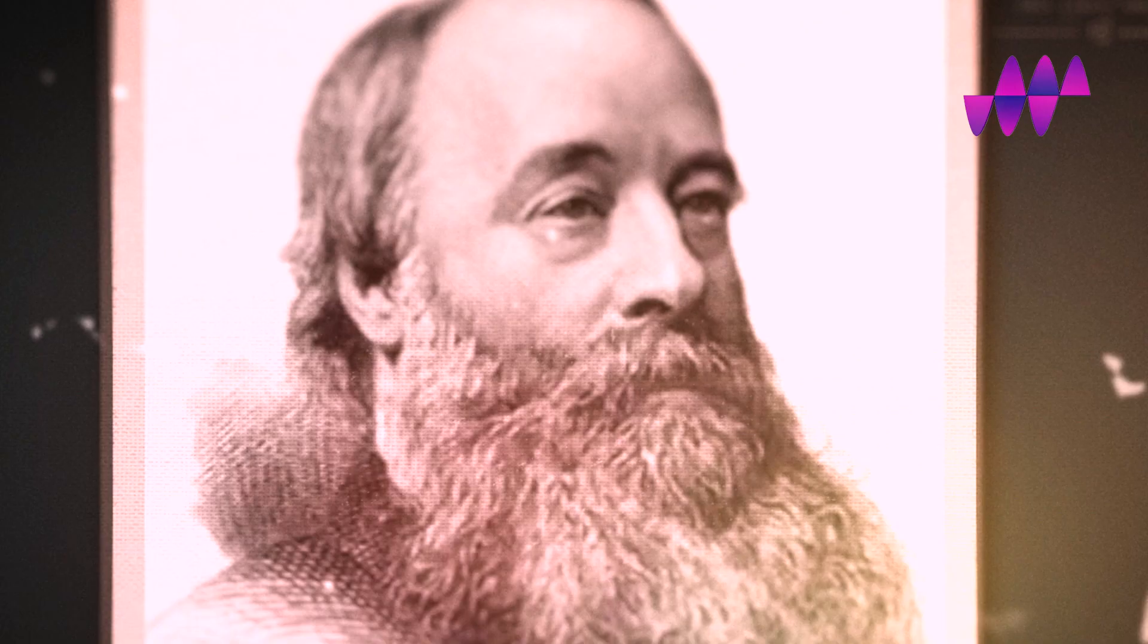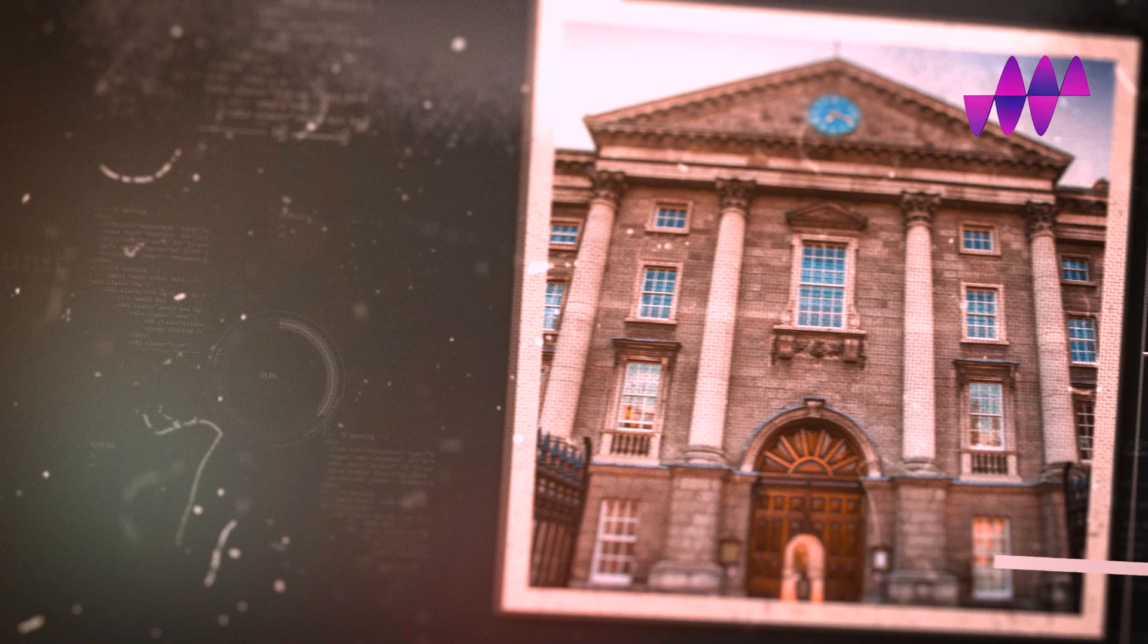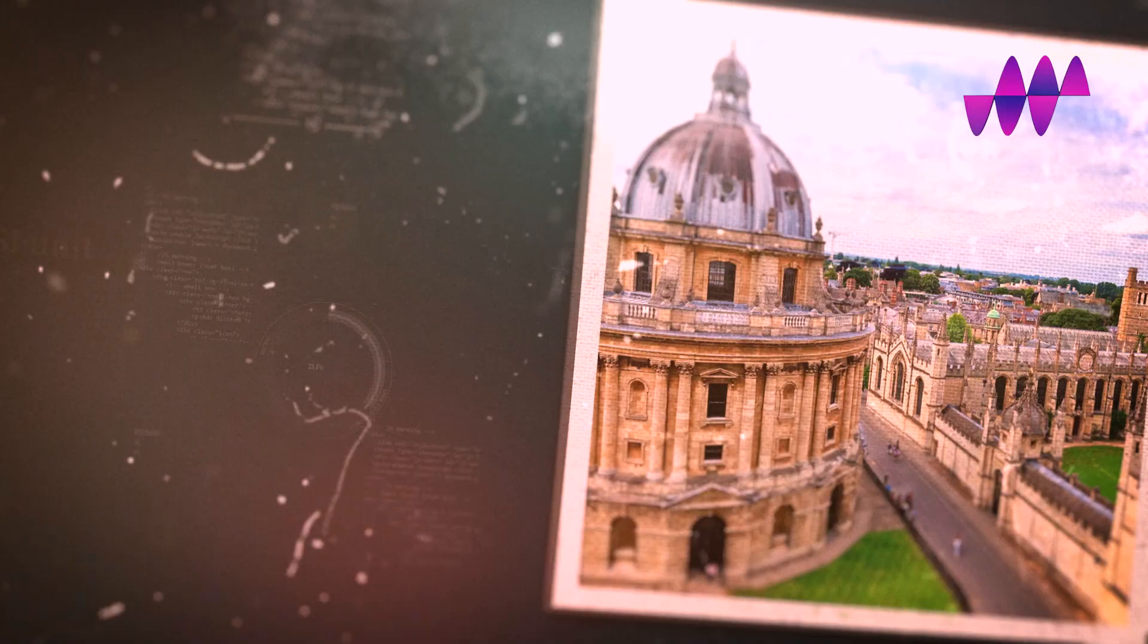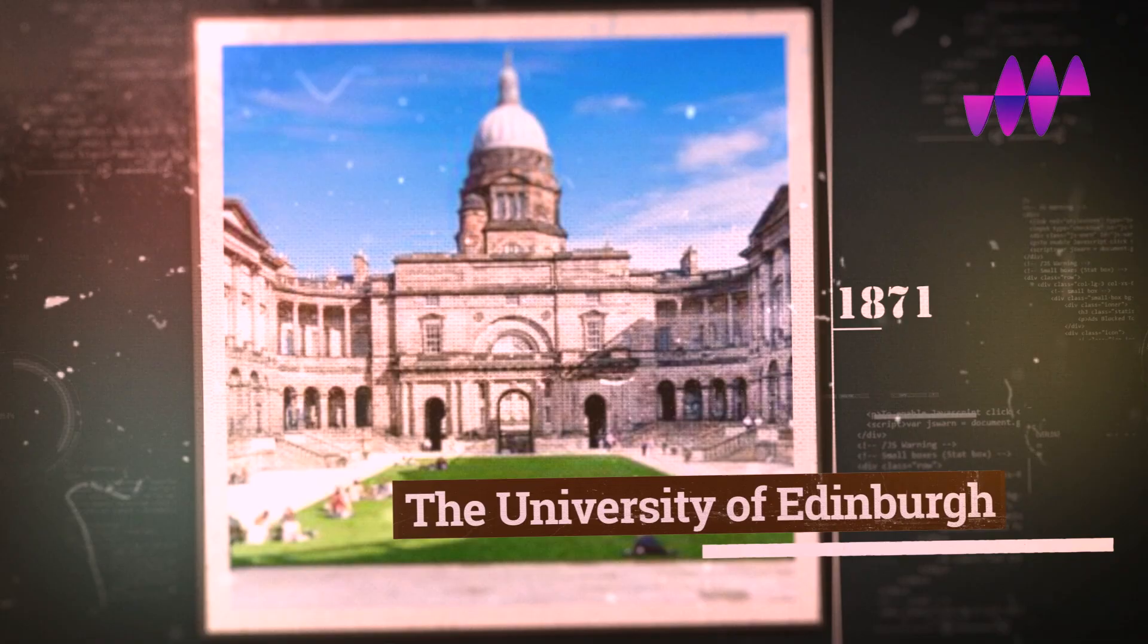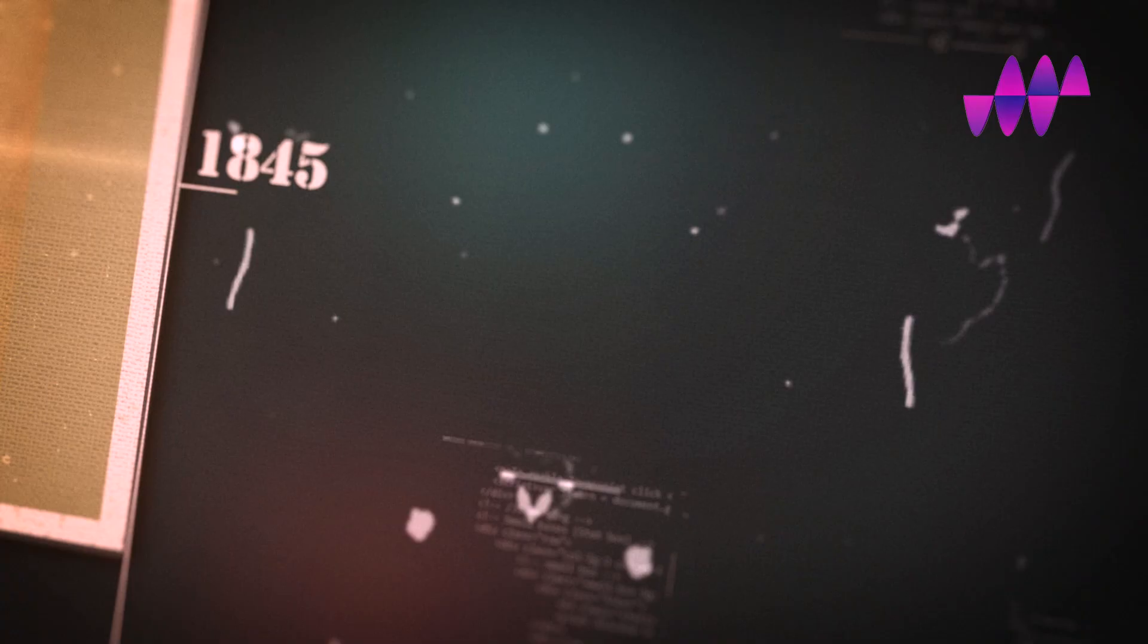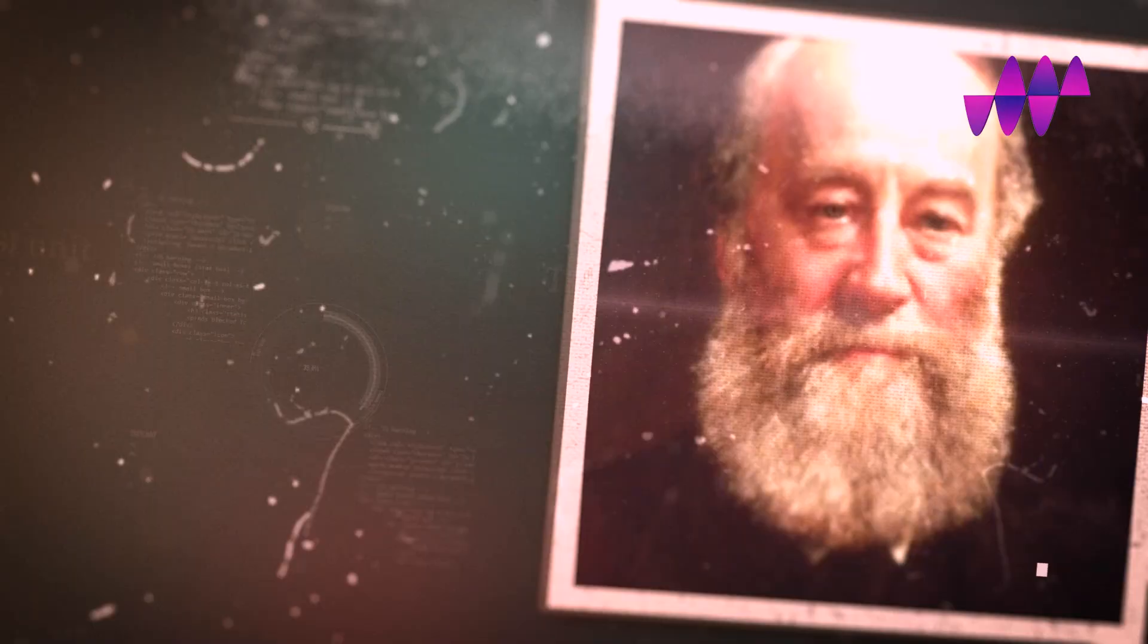Joule received honorary degrees from Trinity College Dublin in 1857, the University of Oxford in 1860, and the University of Edinburgh in 1871. In 1878, he was awarded a civil list pension of 200 pounds per year for his contributions to science.